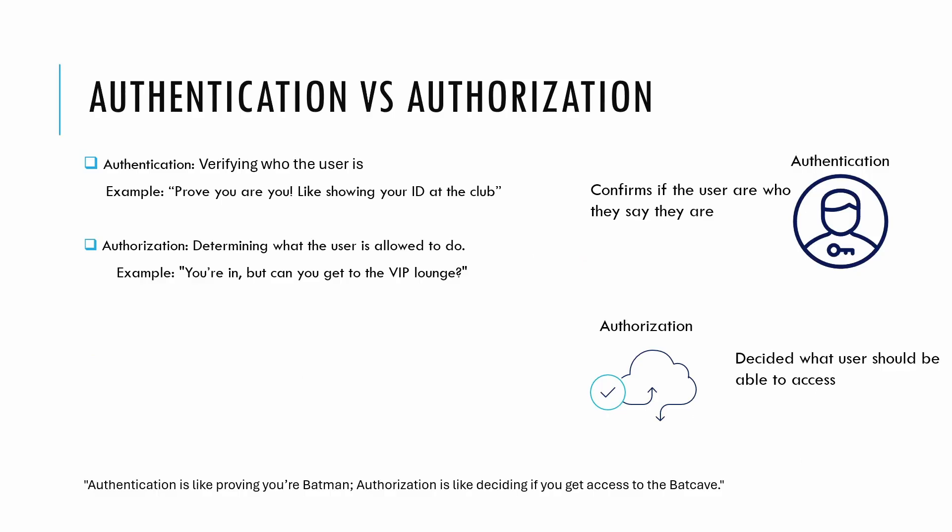Let's start with two key terms that often get mixed up: authentication and authorization. Authentication is all about proving your identity — it's like showing your ID to a bouncer at a club, verifying that you are who you say you are. Authorization, on the other hand, decides what you are allowed to do. Think of it as getting access to the VIP lounge after proving your identity. This difference is critical because each protocol handles these aspects in its own way.